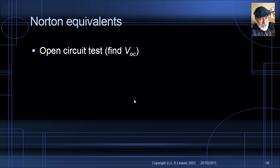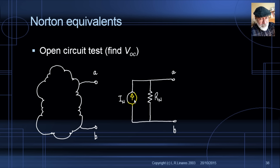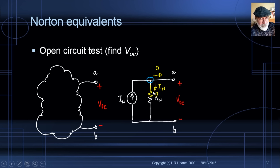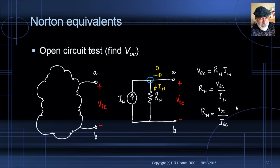For R_Norton, we perform the open circuit test. If the circuits are equivalent, VOC from the actual circuit equals VOC in the Norton equivalent. In the Norton equivalent with an open circuit at the port, no current flows through the wire, so all the Norton current flows through R_N, giving VOC = R_N × I_N. We already know I_N from before, so R_N = VOC / I_N — the same formula as before: open circuit voltage divided by short circuit current.